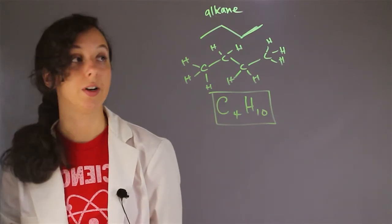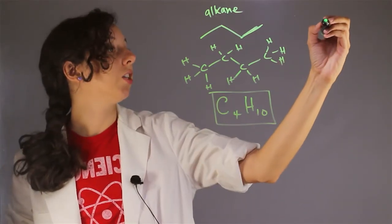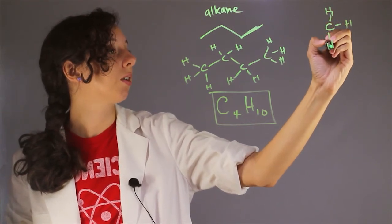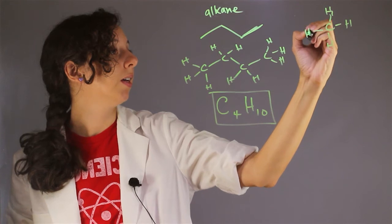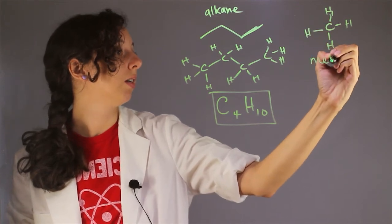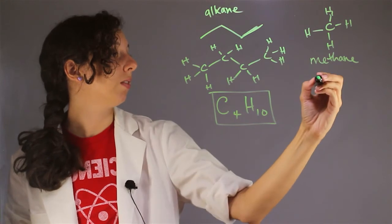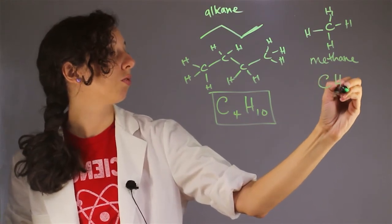Let's do a couple other ones. So if we just have one carbon with all hydrogen attachments, this is also an alkane. This is actually called methane. It's the simplest alkane you can get, and its formula is CH4.